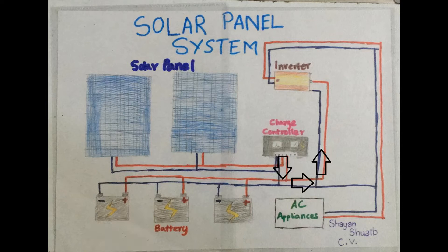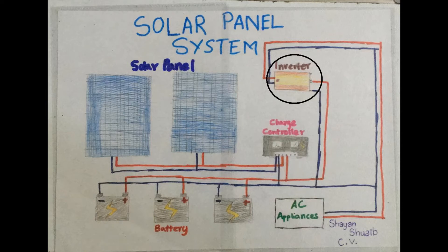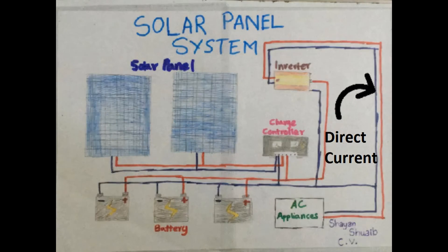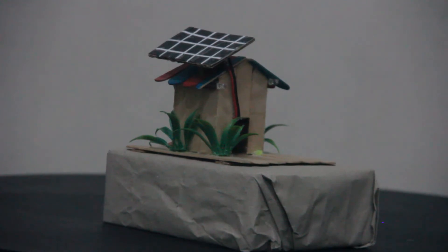Apart from charging the batteries, electricity also goes to the inverter and transforms from direct current to alternating current, and is used for household appliances. At night, while there is no sunlight, the households use electricity stored in the batteries.